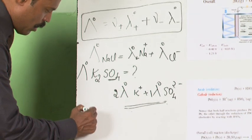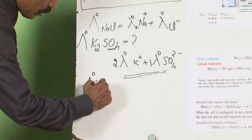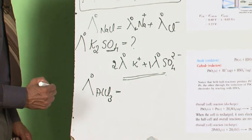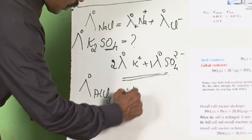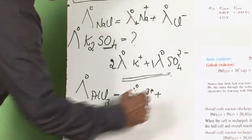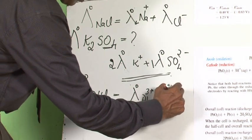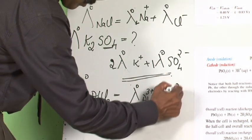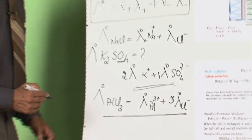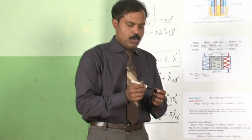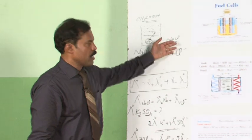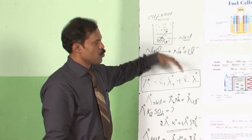By the same approach, the molar conductivity at infinite dilution of aluminum chloride can be written as the sum of the contributions of Al³⁺ and Cl⁻ ions. This law can be utilized to find out the lambda infinity — the molar conductivity at infinite dilution — of weak electrolytes, which otherwise could not be found out experimentally.